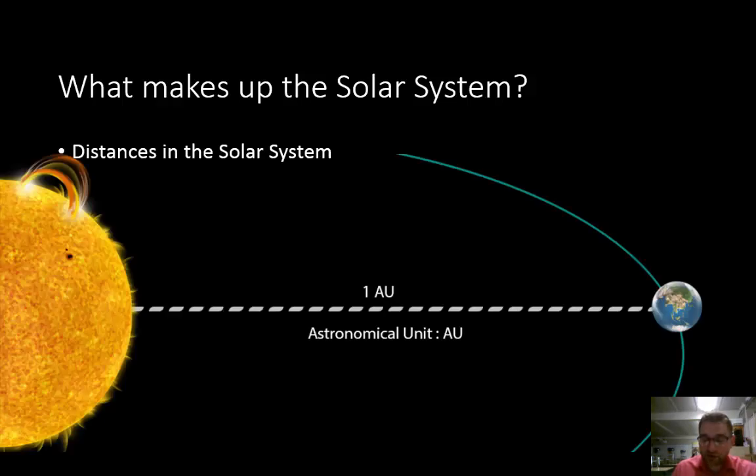One astronomical unit, or AU, equals the average distance between Earth and the sun. That is approximately 150 million kilometers. The solar system extends more than 100,000 astronomical units from the sun.